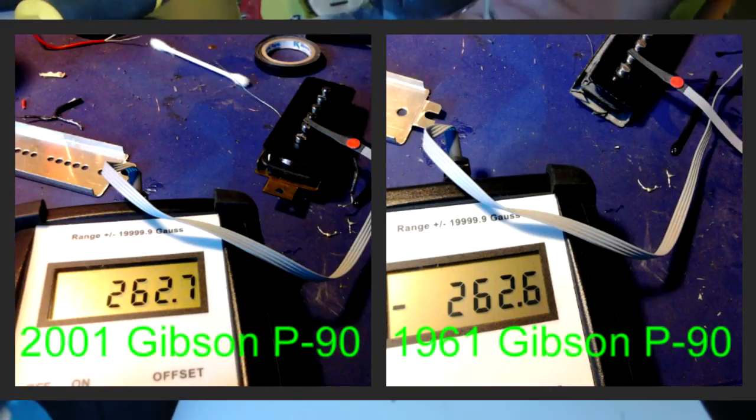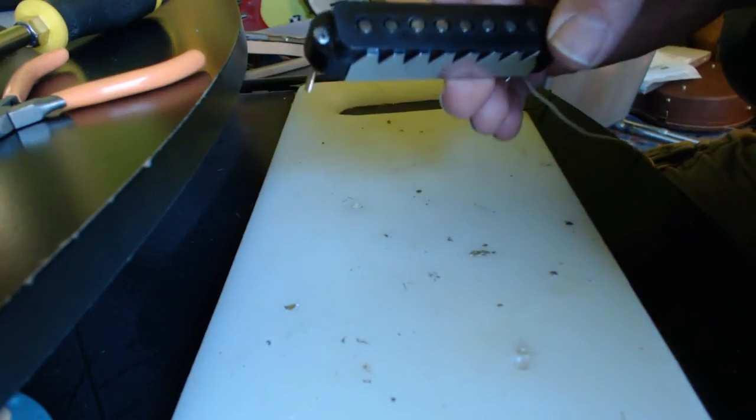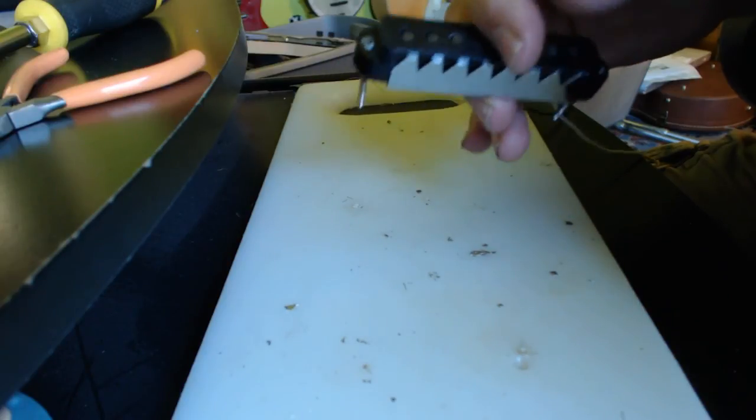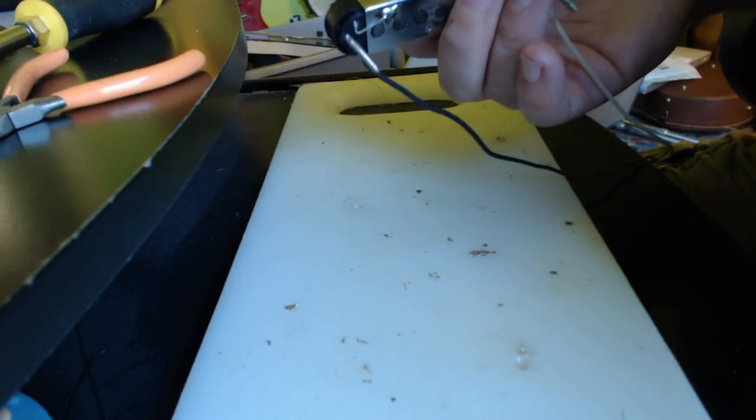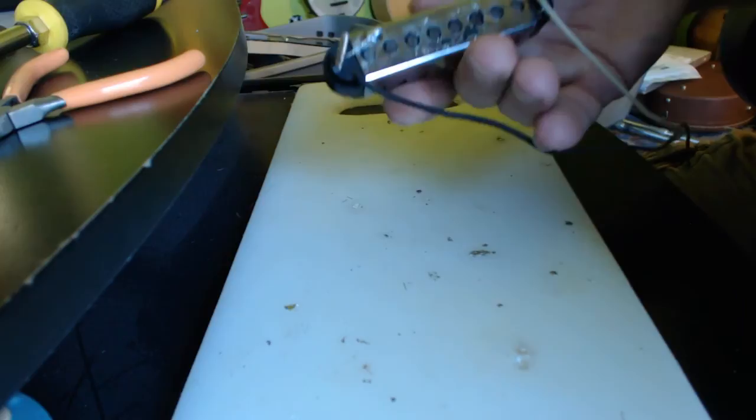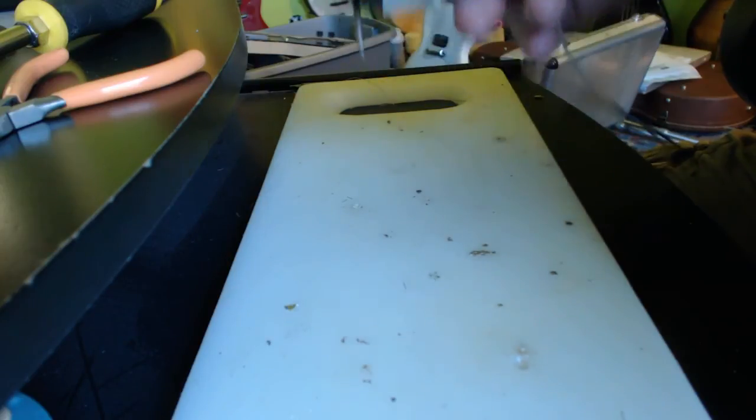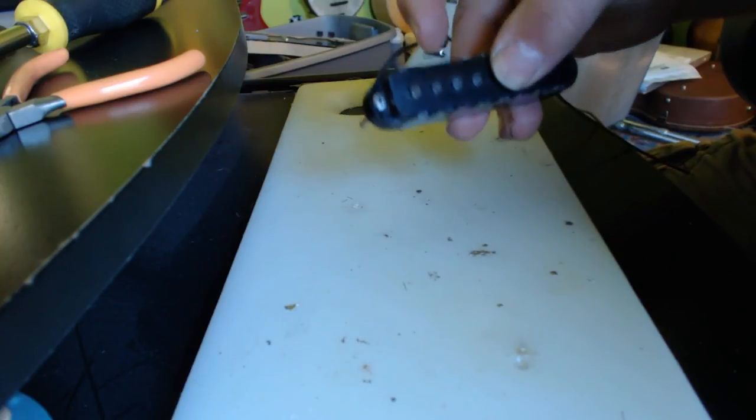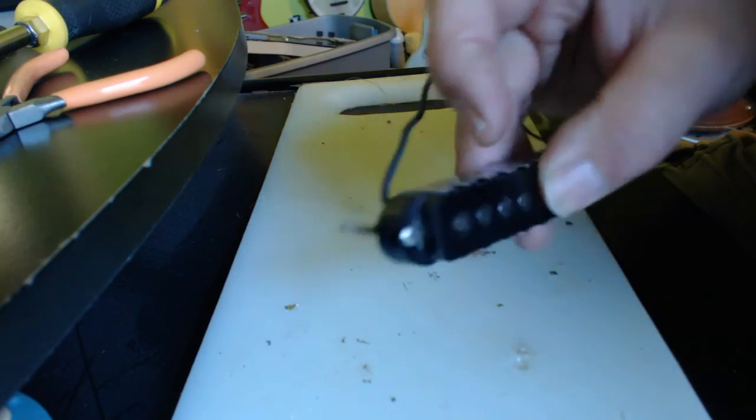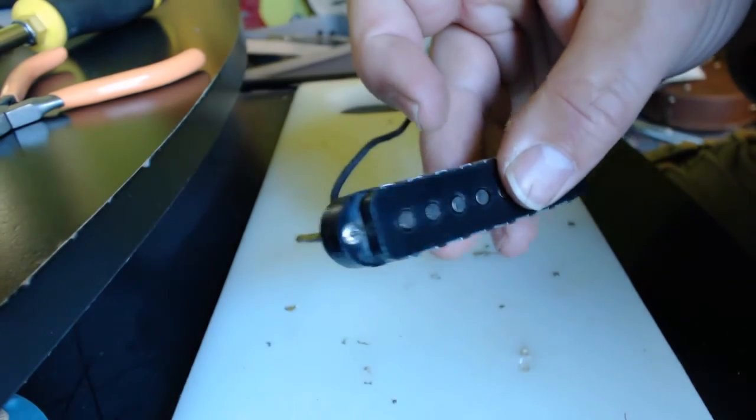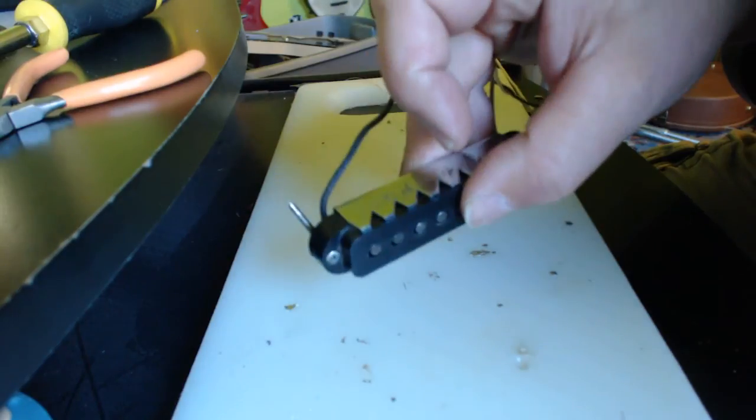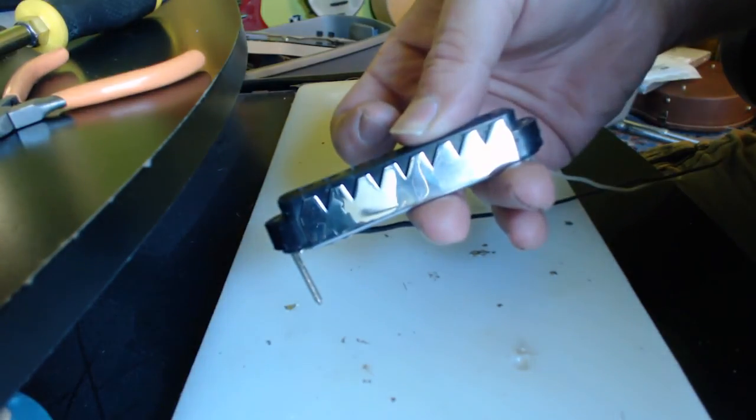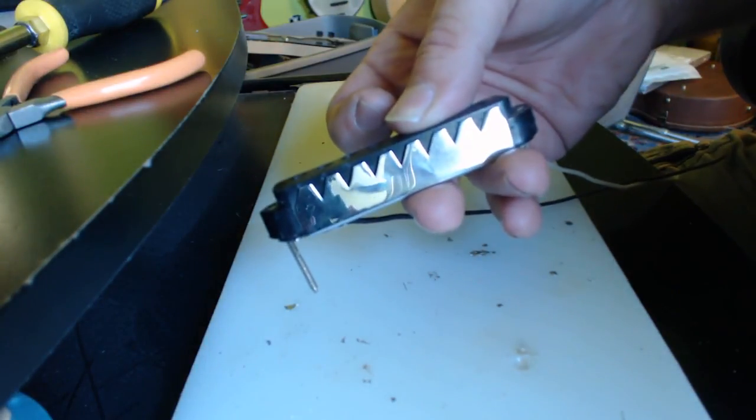So there we have it. That's how we bring this incredibly odd and rare bit of Fender's musical history back to life and hopefully this will go into someone's restoration project. I don't know, I guess somebody could build an eight string Jaguar, put this in it. That would be kind of weird. That's it for now, see you later.